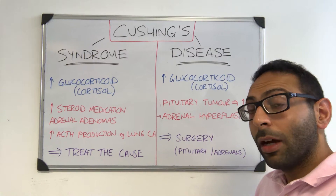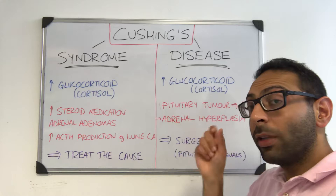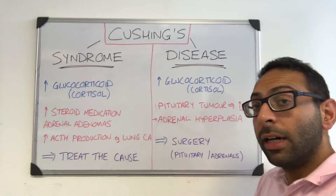I used to always get confused between Cushing's syndrome and Cushing's disease. The one thing that is the same between them is that you end up with an increased glucocorticoid level — things like cortisol levels are too high — but the reasons for it happening are very different.